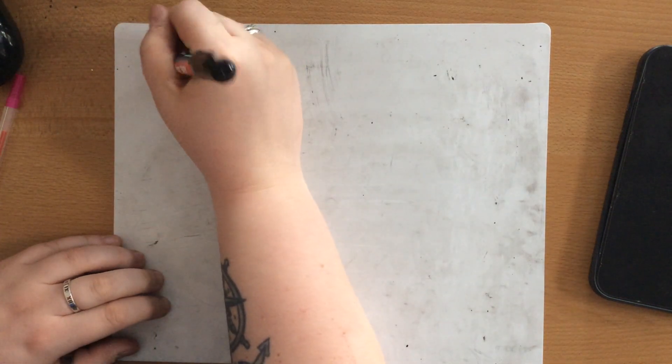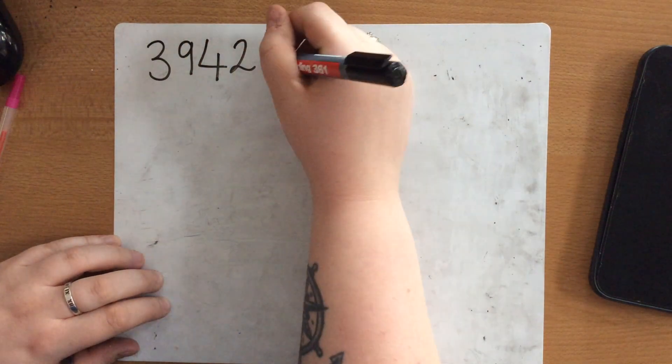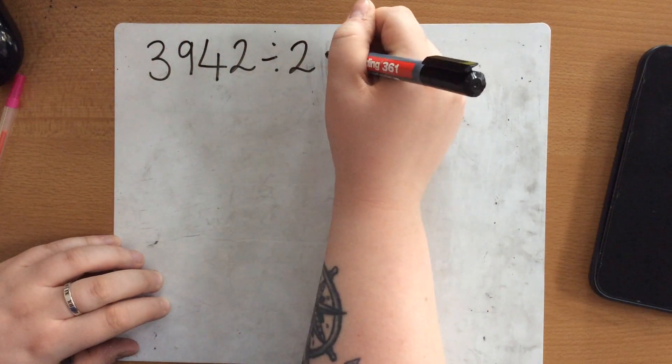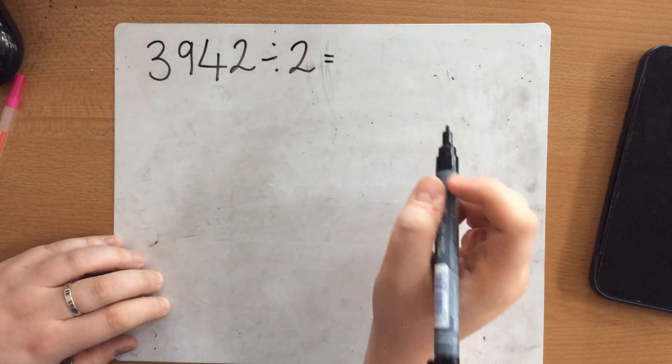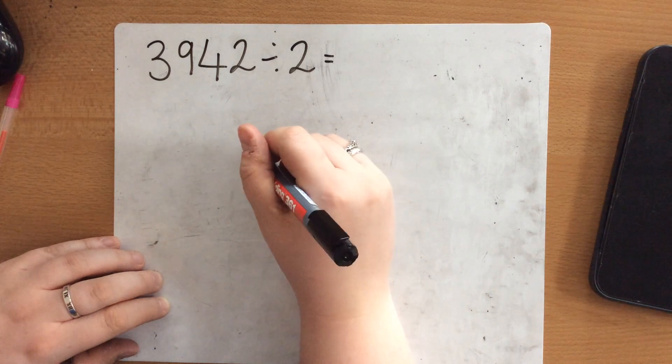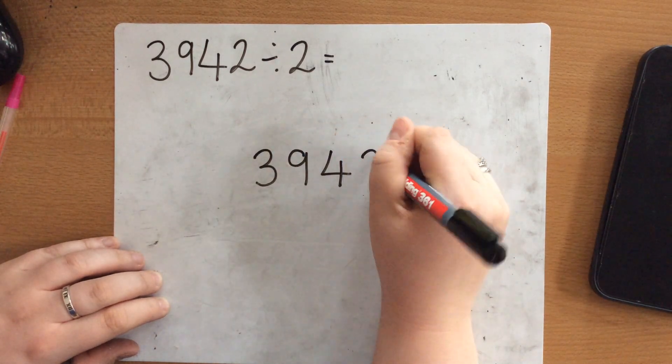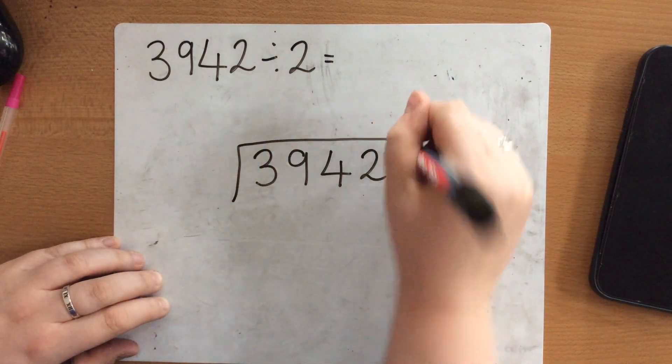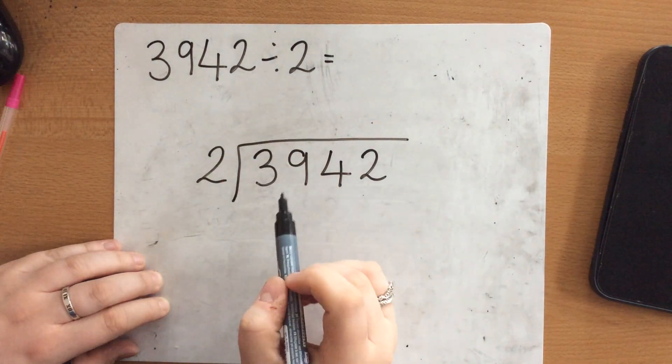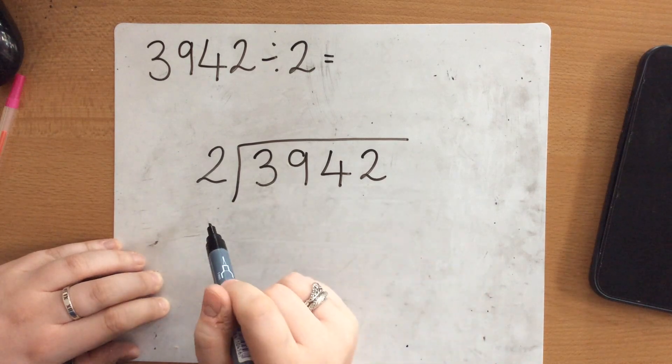So let's go for 3,942 divided by 2. So first of all let's get our bus stop set up. So we are doing 3,942 divided by 2. So my 2 is important and the rest of the number is here.